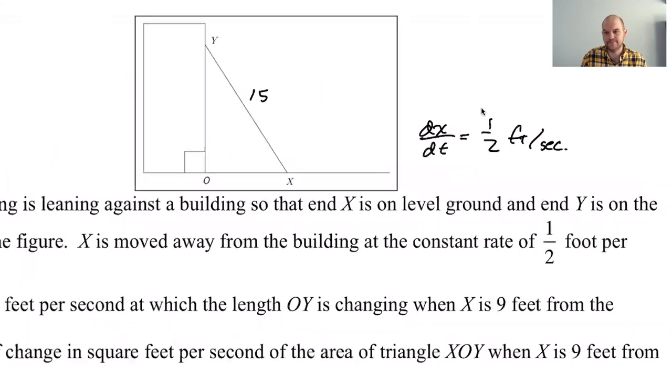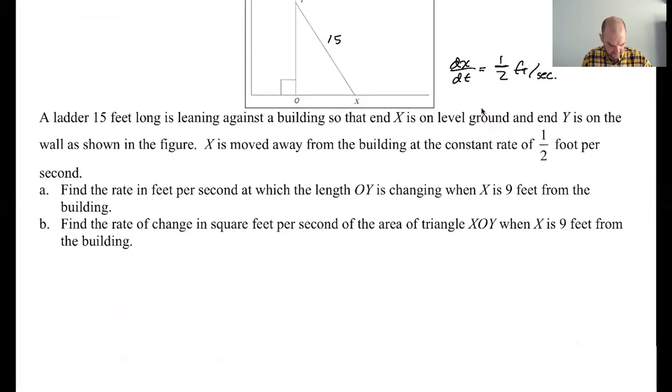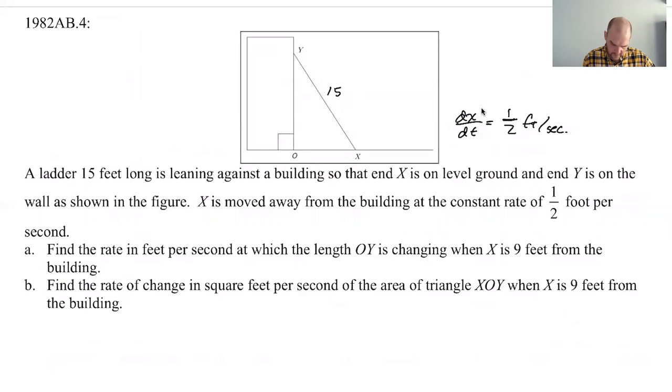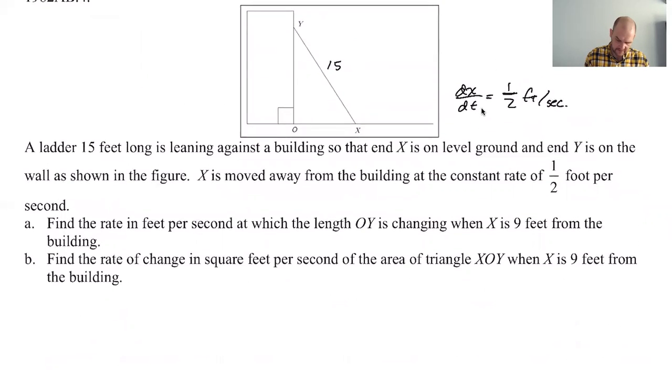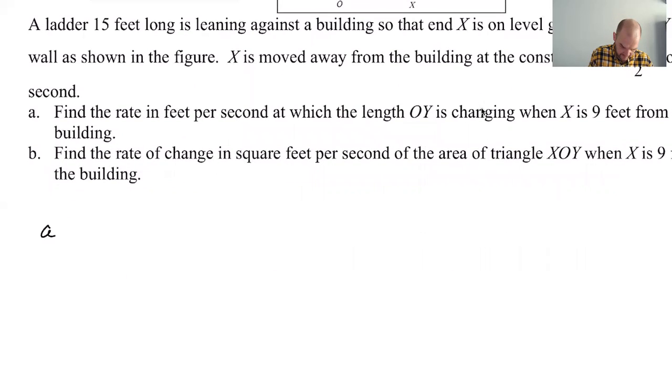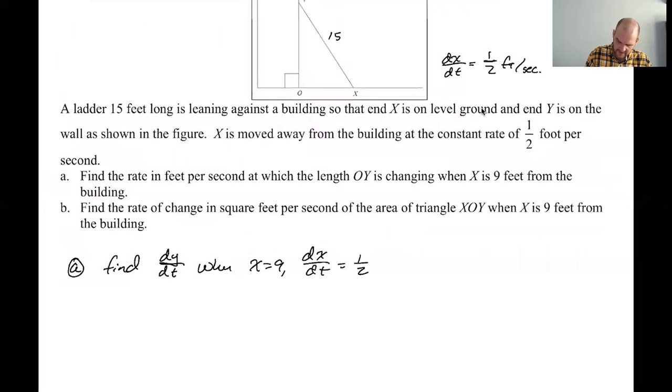One-half foot per second. All right. Find the rate in feet per second at which the length OY is changing when X is nine feet from the building. So just thinking about it, this is going this way, so this has to go this way so that this can stay 15. So OY, it's going to have a negative rate. But the question for A is, find dy/dt when X equals nine, dx/dt equals one-half. So I like to write down the things that I know.